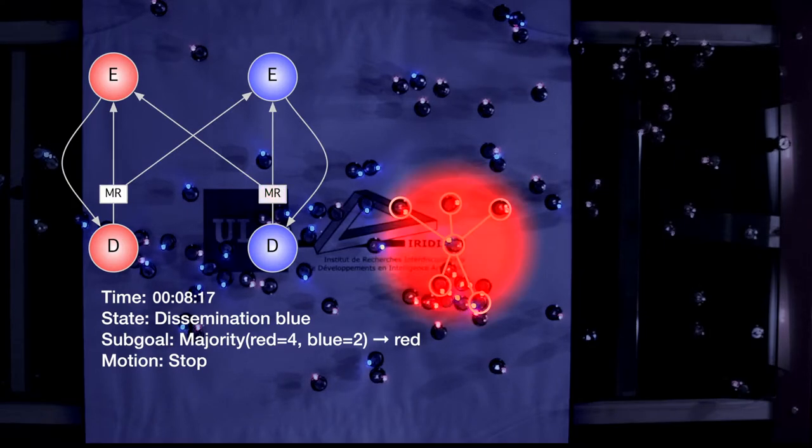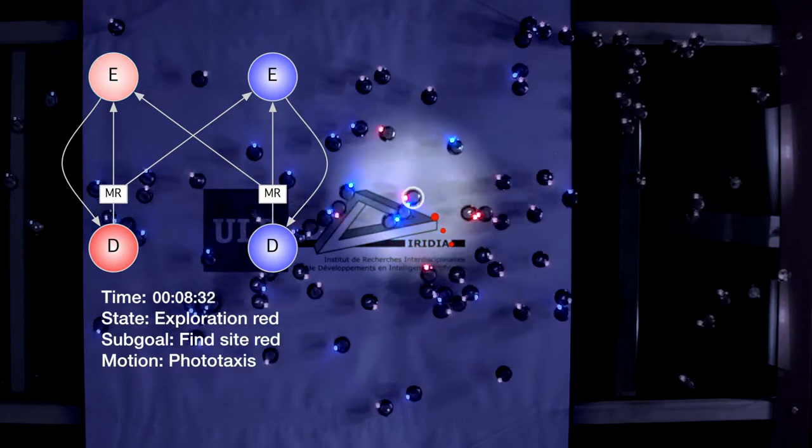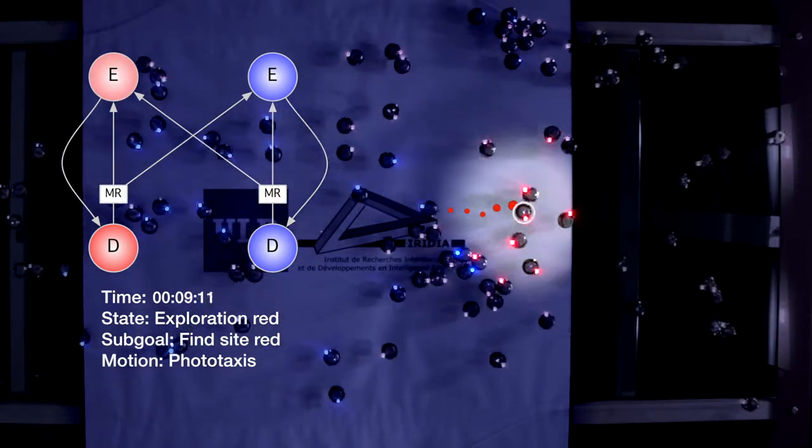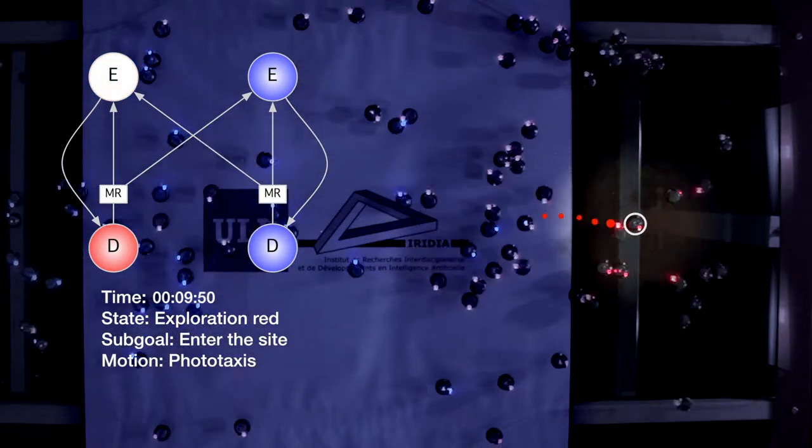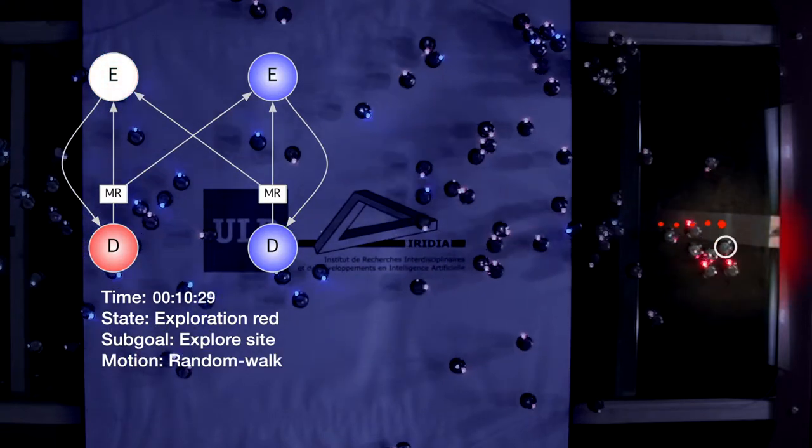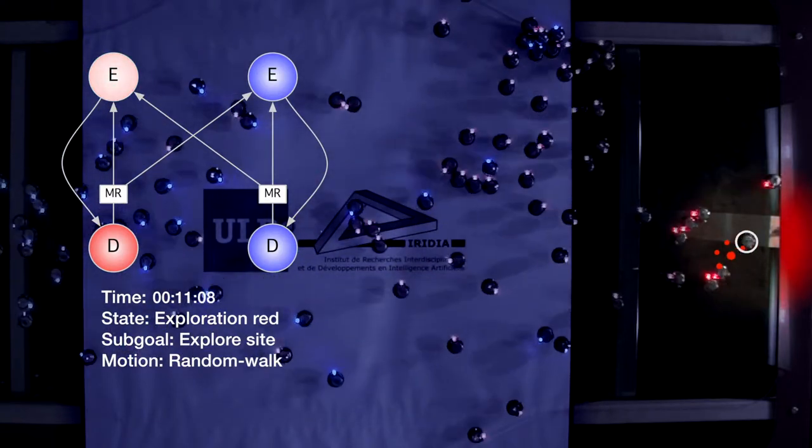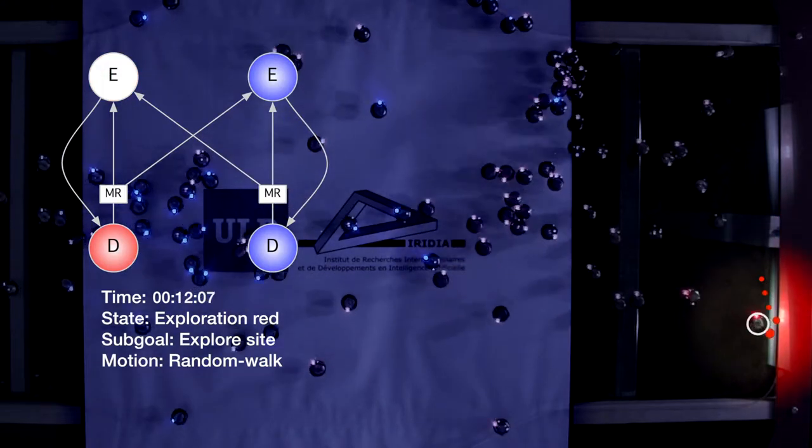It then applies the majority rule to update its preference, which determines the site it will explore next. In the exploration state, the robot travels towards the chosen site. Once there, it randomly explores the area in order to estimate the site quality.